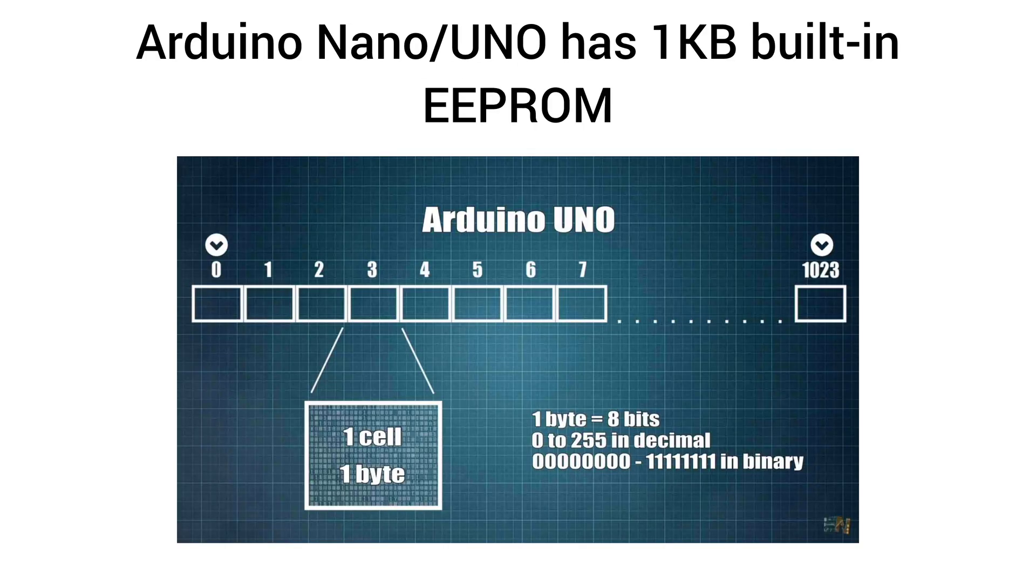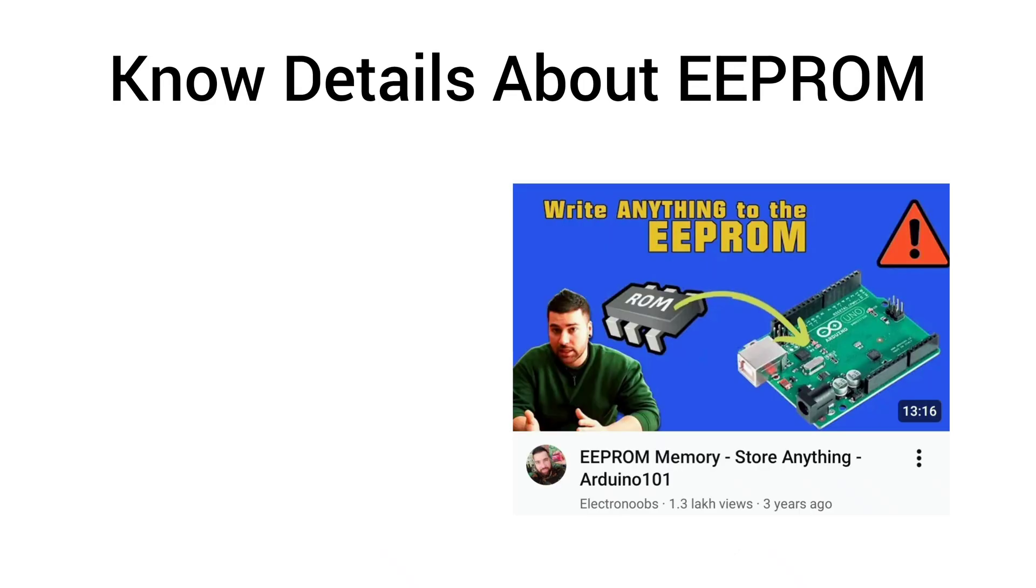The Arduino Nano has 1024 bytes of built-in EEPROM, which stores data permanently in one byte cells, holding values from 0 to 255. For a detailed explanation of EEPROM, you can watch this video on YouTube channel Electronoob.